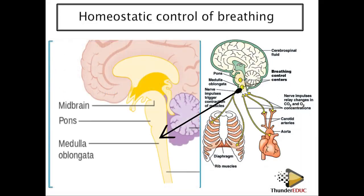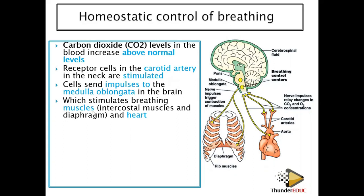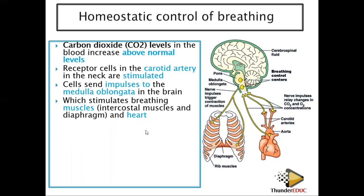The medulla oblongata stimulates the breathing muscles — the intercostal muscles, the diaphragm, and the heart. It sends a message to these muscles and the heart so they contract. When they contract, carbon dioxide is exhaled out of the lungs. The heart pumps faster, sending blood to the lungs at a faster rate so the lungs breathe in and out quickly, exhaling carbon dioxide out of the body.